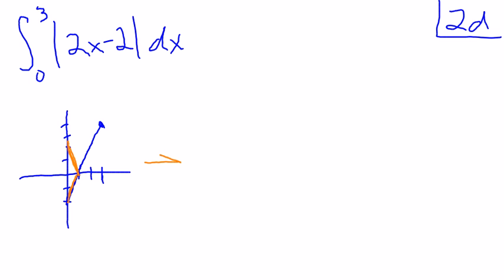So I'll redraw that. My absolute value of 2x minus 2 looks like 1, 2, 3, 1, 2, 3, 4, 5. So I'm going to be here, I'm going to go down to here, and then I'm going to go up to there, like that. So notice I've got two crudely drawn triangles.